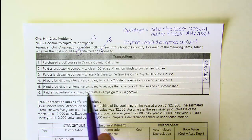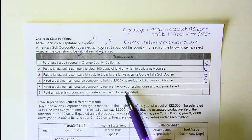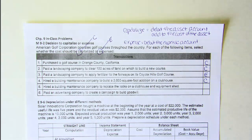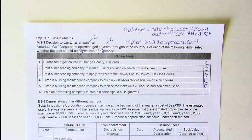Number five: hired a building maintenance company to replace the locks on a clubhouse and equipment shed. Normally this would be capitalized because we're talking about a cost after the asset has been in use, and if that cost enhances efficiency, capacity, or lifespan, we capitalize it. Locks last a long time — greater than a year — so normally it would be capitalized. But because this represents an item that is so minimal in value, we're going to expense it.